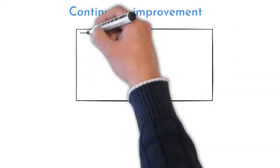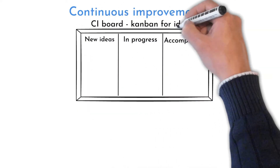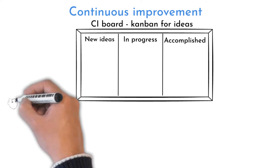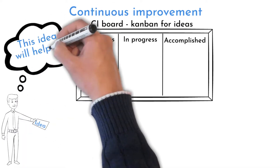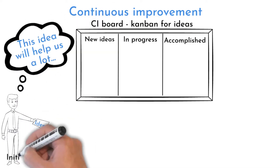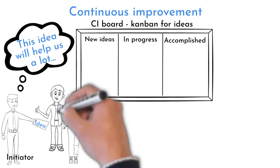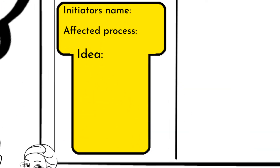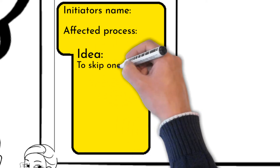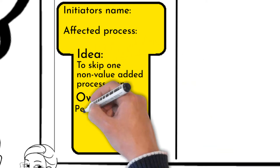A great tool supporting continuous improvement in the organization is the continuous improvement board. People submit ideas via cards. The person who submits an idea is called the initiator, and he ideally describes his solution vision. Importantly, the idea is reviewed with the team affected by the possible change, then assigned to an owner.